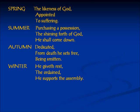In this publication we see that Adam is translated as 'the likeness of God,' Shet is 'appointed,' Enosh is 'for suffering,' Kenan is 'purchasing a possession,' Mahalal is 'shining forth' — and that's a valid interpretation of that verb — Yared is 'coming down,' Chanukh is 'dedicated,' Metushalach is 'his death sets free,' Lamech is 'smitten,' and Noach is 'giving rest.' They then add Shem and Arpachshad so they can have 12 to parallel the ideas of the zodiac.